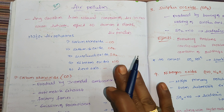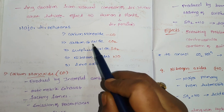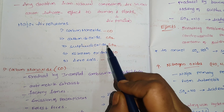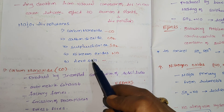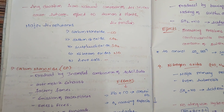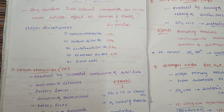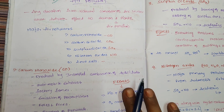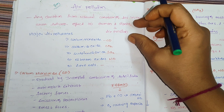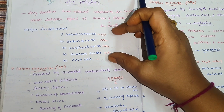The major air pollutants are carbon monoxide, carbon dioxide, sulfur dioxide, nitrogen oxides, and aerosols. These are the major air pollutants. You have to write some important introduction and then what are the air pollutants.